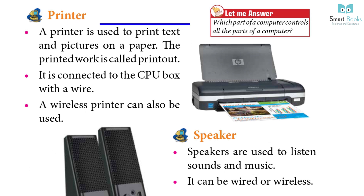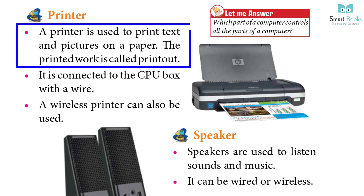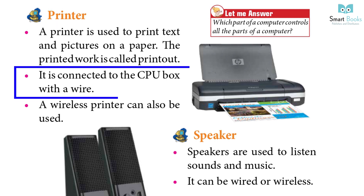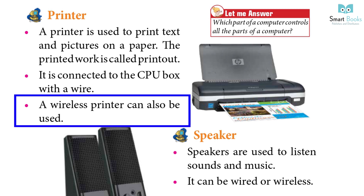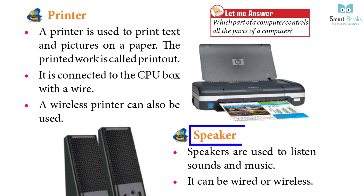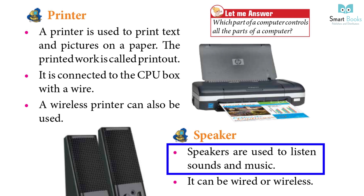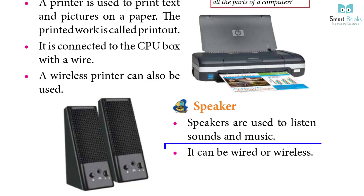Printer: A printer is used to print text and pictures on paper. The printed work is called a printout. It is fixed to the CPU box with a wire, though a wireless printer can also be used. Speaker: Speakers are used for listening to sounds and music. They can be wired or wireless.